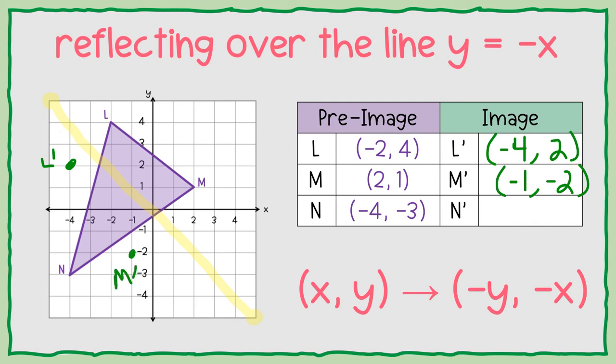And the last vertex of this triangle, we are switching the numbers and changing the sign. So N prime is going to be at positive 3, positive 4.